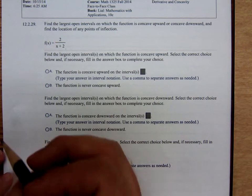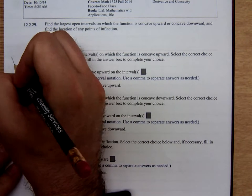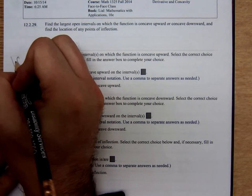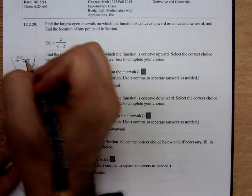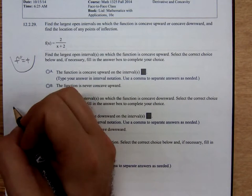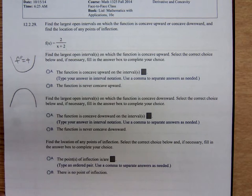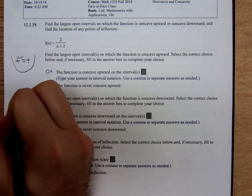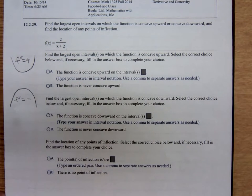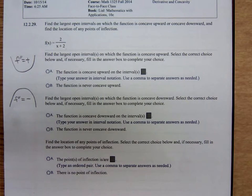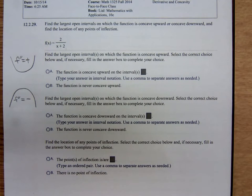Well we know that if a graph is concave upward f double prime is a positive number. On the other hand if the graph is concave downward f double prime on that interval will be negative. So to determine concavity we have to find the second derivative f double prime.